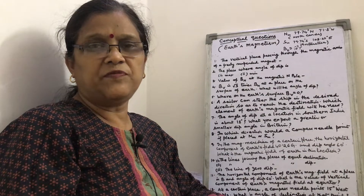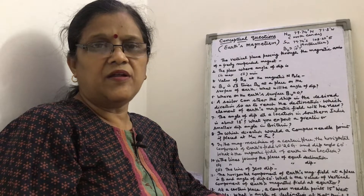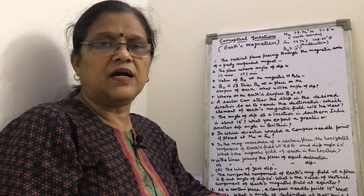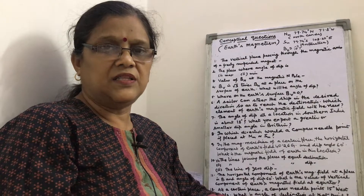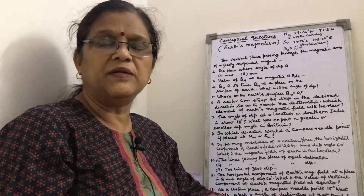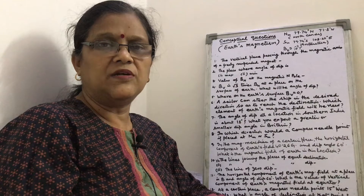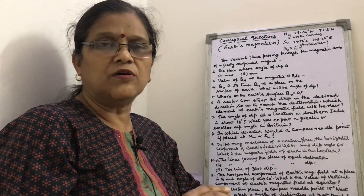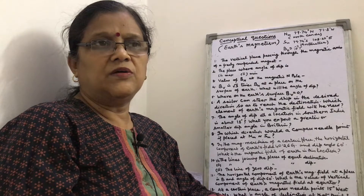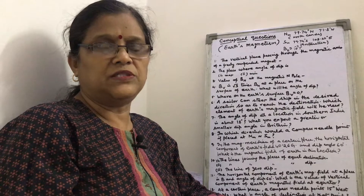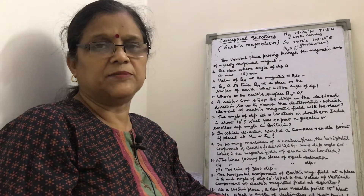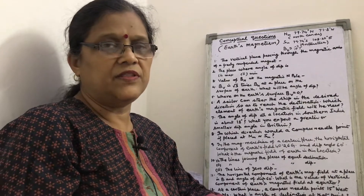Hello, welcome to my channel. In class 12, we previously discussed Earth's magnetism and determined the three parameters used to describe Earth's magnetic field at any point on its surface. These parameters are called the elements of Earth's magnetic field: angle of dip, angle of declination, and horizontal component of Earth's magnetic field. Today I have selected some important questions from board and competitive examinations. Stay connected till the end of the video and please subscribe and press the bell icon.